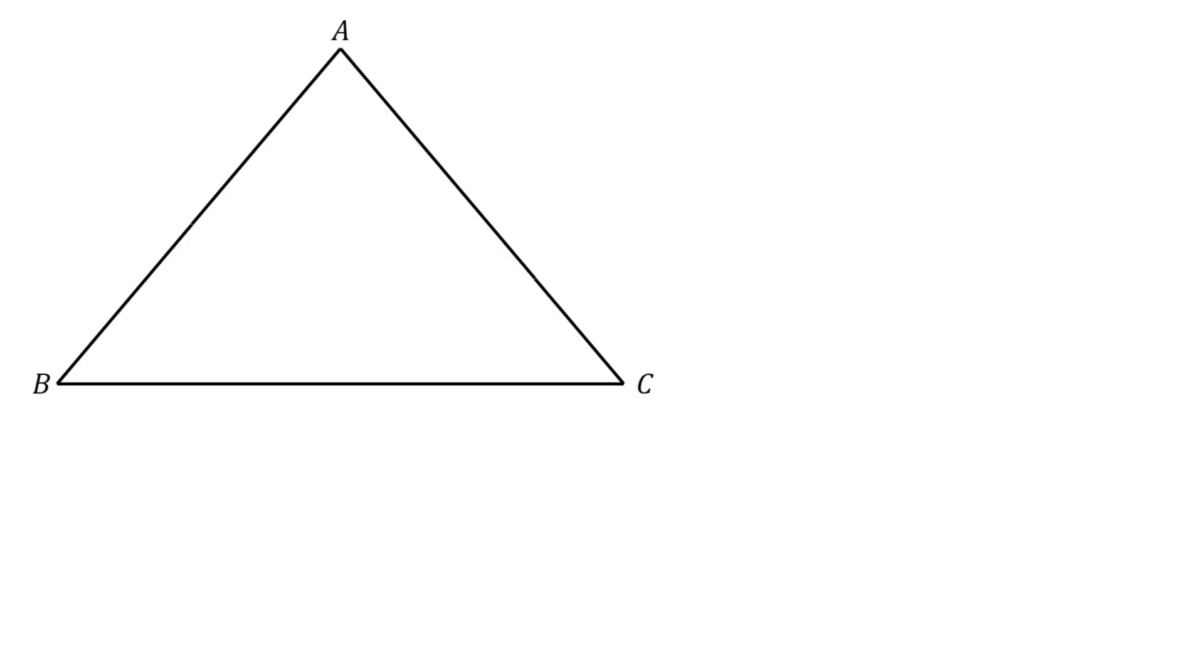ABC is an isosceles triangle with equal sides given by 10 units and base angles given by 50 degrees. BDC is another isosceles triangle with base angles given by 40 degrees.